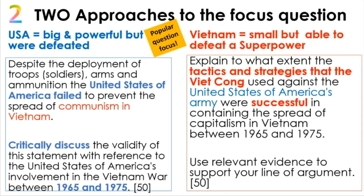The essay question can be phrased along two approaches for the focus question. On the left-hand side, the essay question might make reference to the USA — pointing out that the USA is big and powerful, a superpower with so much military might and strength, but at the end of the day the USA was defeated or unsuccessful in Vietnam. That's the one approach: America is big and powerful, but they were defeated. An example essay question would be: 'Despite the deployment of troops, arms and ammunition, the United States of America failed to prevent the spread of communism. Critically discuss the validity of this statement with reference to the USA's involvement in the Vietnam War between 1965 and 1975.' Essays are worth 50 marks.